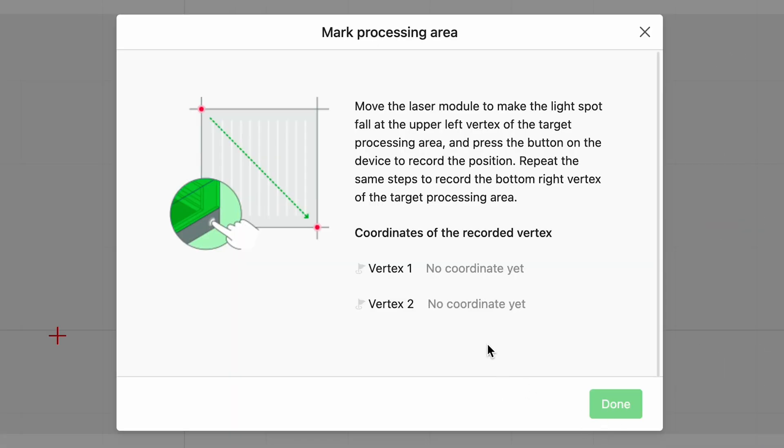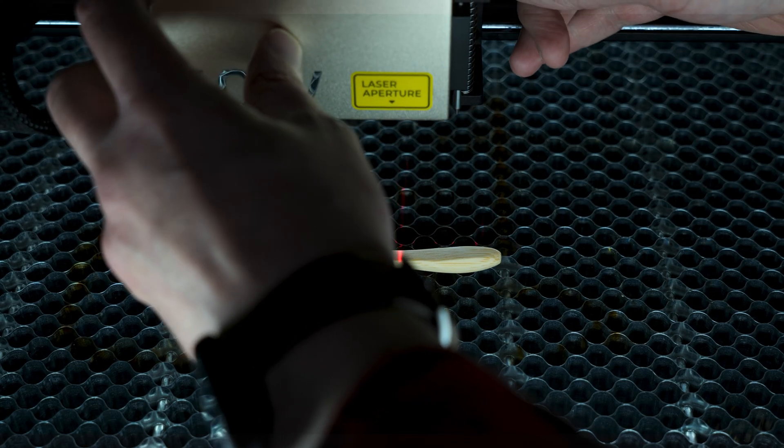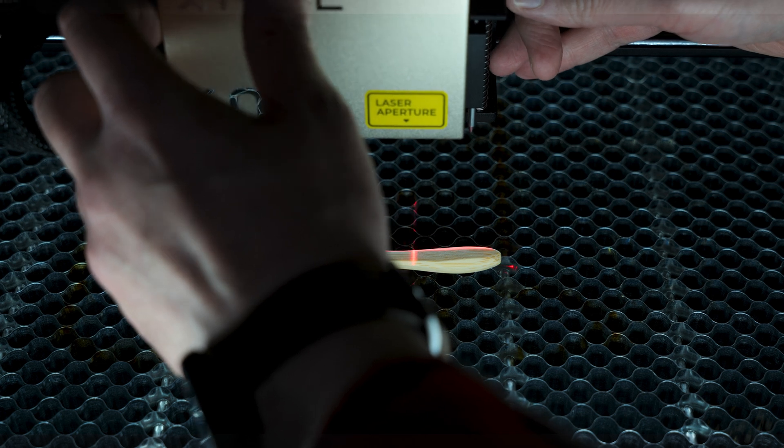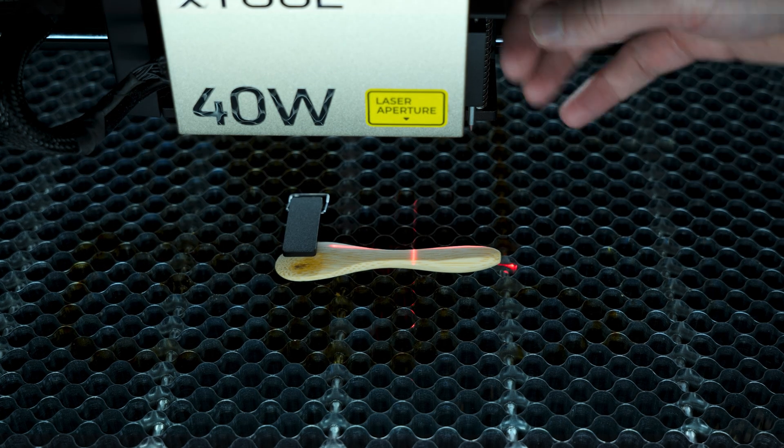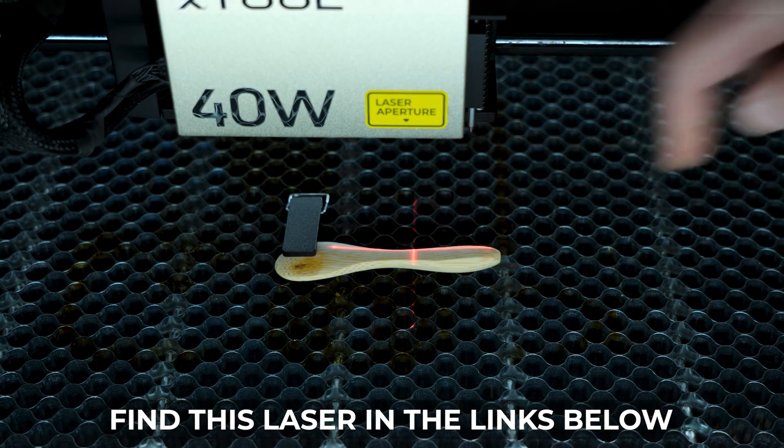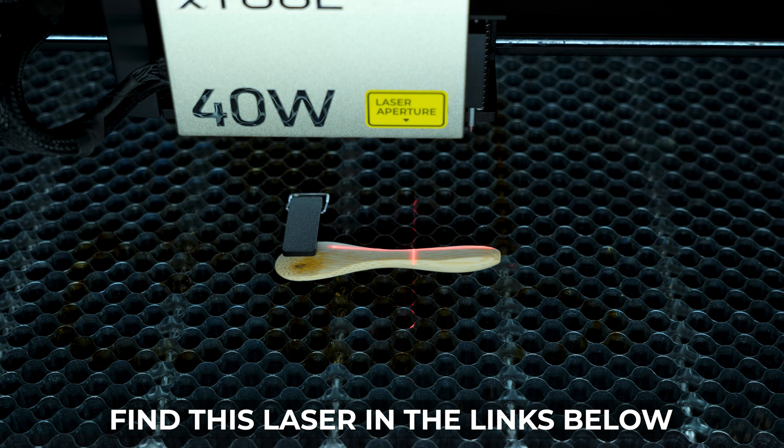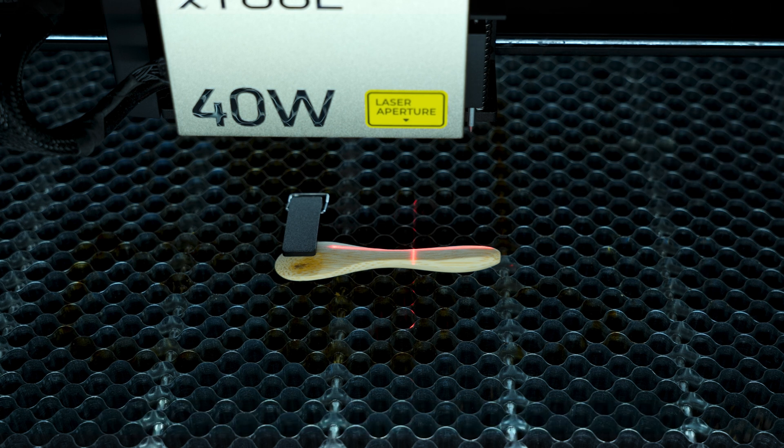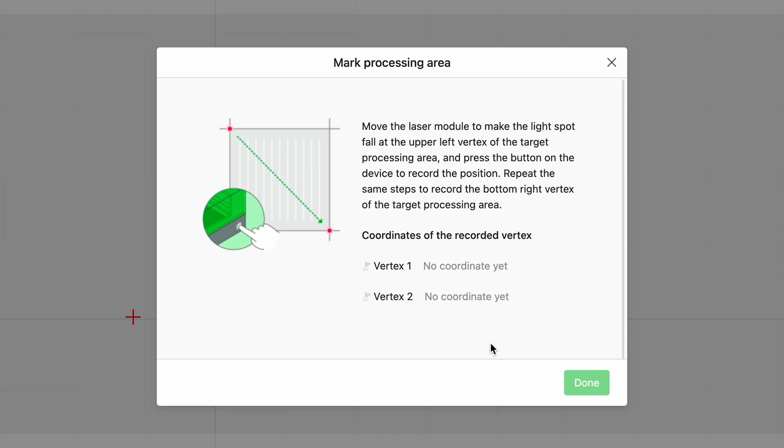it says move the laser module to the top left. So what we are going to do here is to move this right about there. And I'm not sure if you can see the arrow there. So now that we got that, we are going to click the power button on the front of the S1, and it's marked.